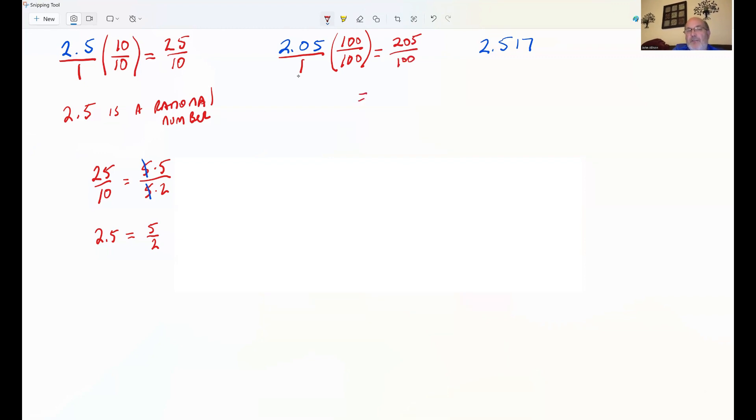I'm going to factor again. I know 5 times 40 is 200. So 5 times 41, those are both prime numbers, is 205, and 5 times 20. 5 times 20 is 100. Now I could factor 20 as 5 times 4, but I'm still only going to have one 5 cancel, because there's only one 5 as a factor in the numerator.